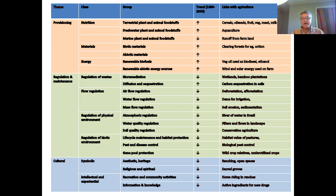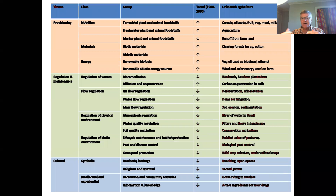This last slide shows how all of these things link with agriculture according to the Millennium Ecosystem Assessment — many things discussed in this set of lectures are listed here. Think through what might be the link, say, with a dam for irrigation and water flow regulation: if you're damming a river course, how does that create a negative effect in terms of water flow regulation? That brings this set of mini lectures to a conclusion.